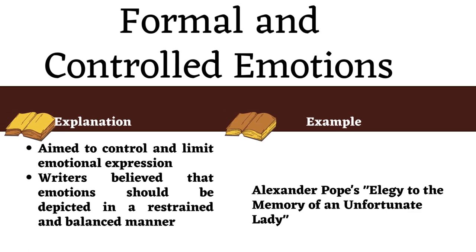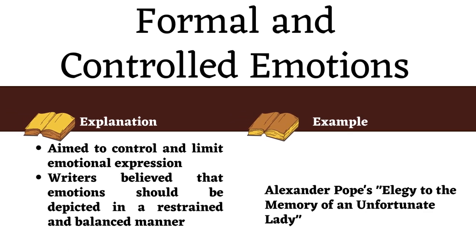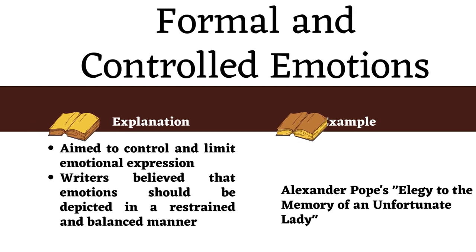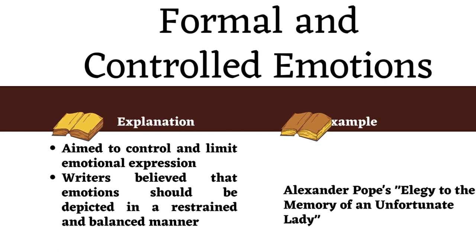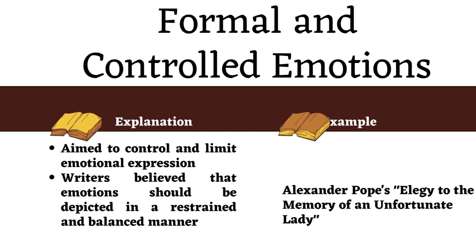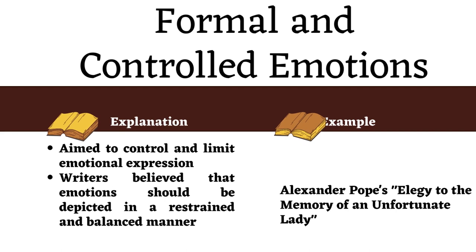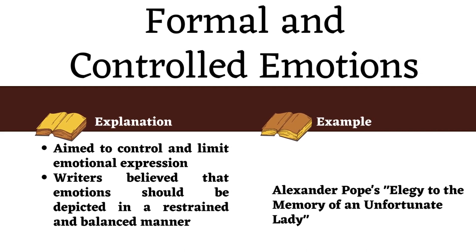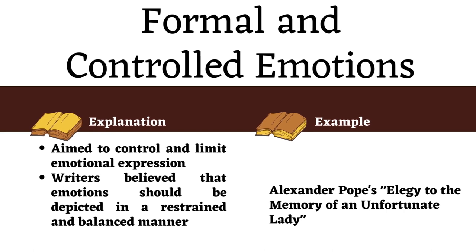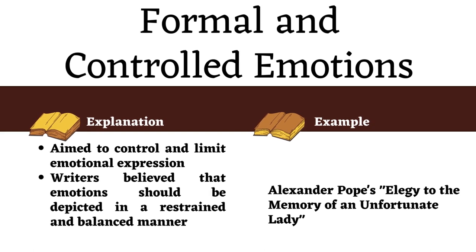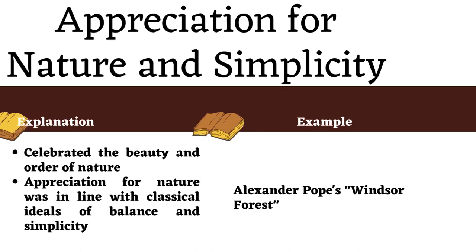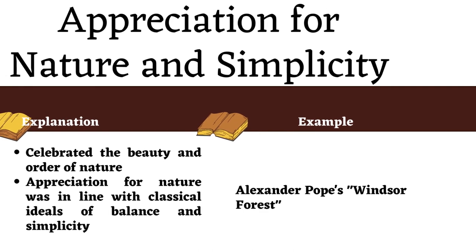Formal and controlled emotions: in contrast to the Baroque period, neoclassical literature aimed to control and limit emotional expression. Writers believed that emotions should be depicted in a restrained and balanced manner to maintain rationality and decorum. Alexander Pope's Elegy to the Memory of an Unfortunate Lady explores grief and mourning in a controlled and formal style, reflecting the neoclassical approach to emotional subjects.